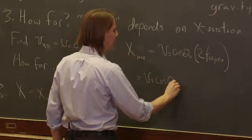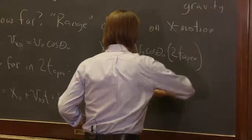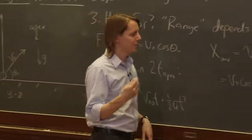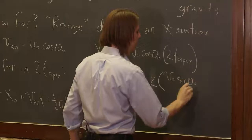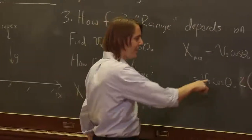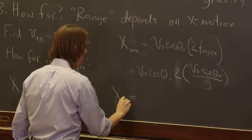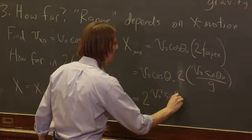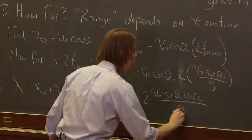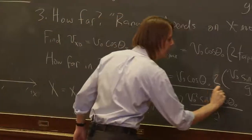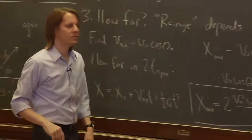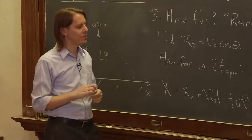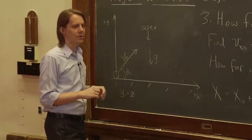The range, x max, equals v naught cosine theta naught times two times the apex time. Substituting in that the apex time is v naught sine theta naught over g, you get x max equals two times v naught squared times sine theta naught cosine theta naught over g. You'd want to be able to derive that quickly, but it may also be worth memorizing if you'll use it repeatedly: two v naught squared sine theta naught cosine theta naught over g. Everything you need is in the initial conditions and g.